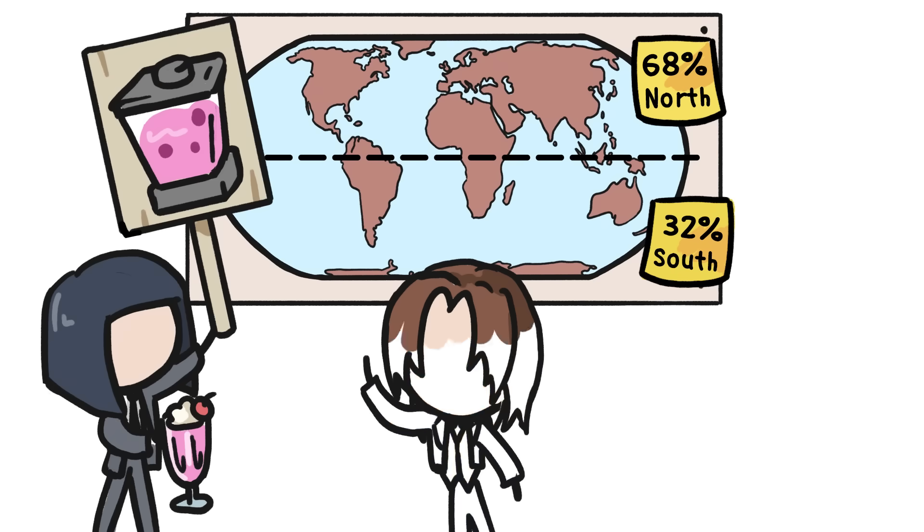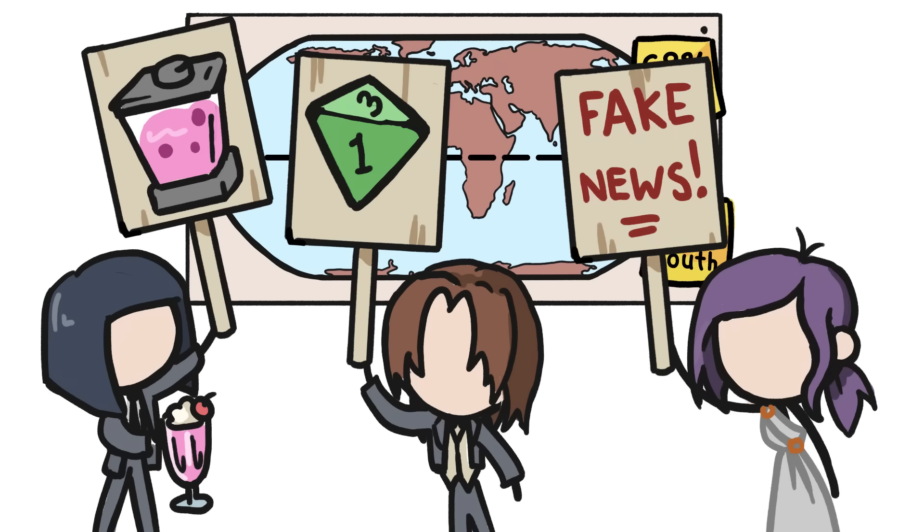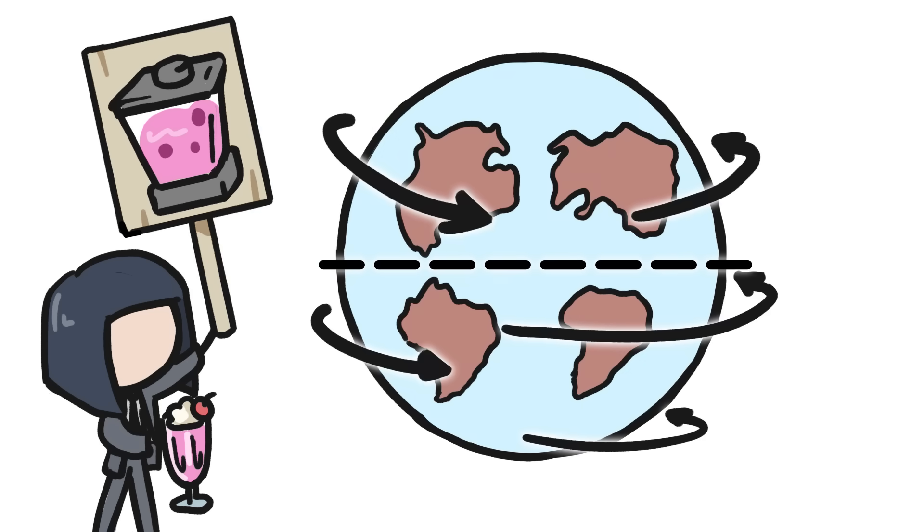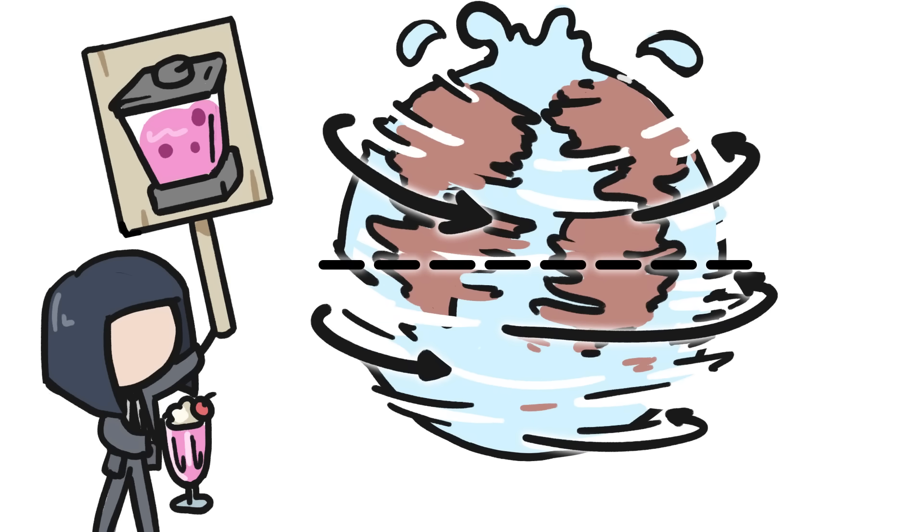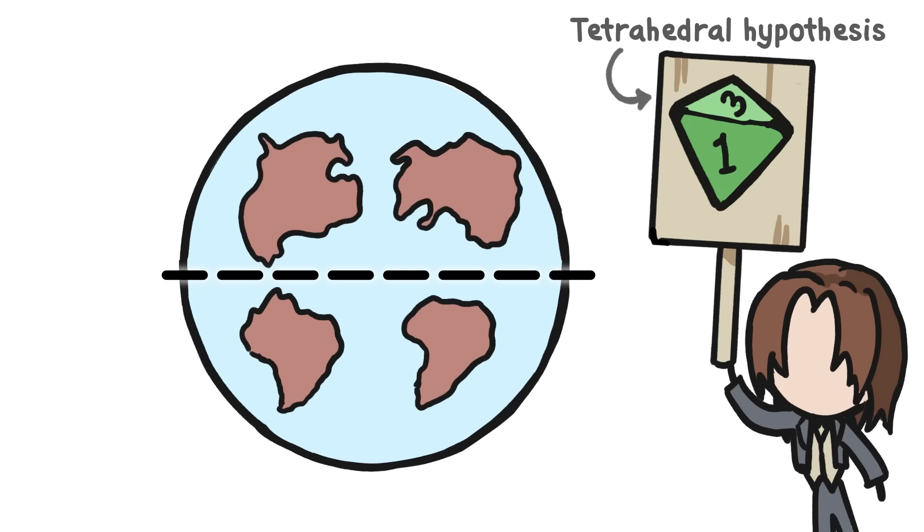Over the years, people have come up with all sorts of hypotheses to explain this uneven distribution. Some thought that the rotation of the Earth was somehow pushing the continents upward, sort of like what happens to a smoothie in a blender.